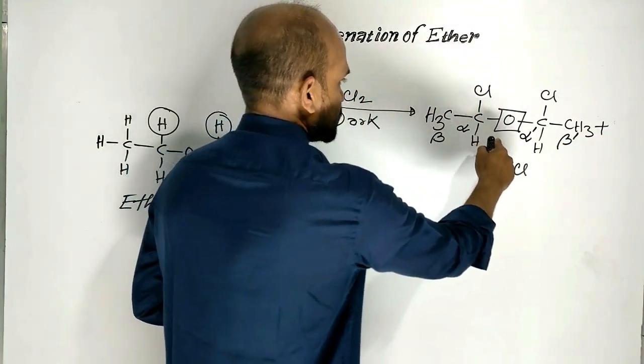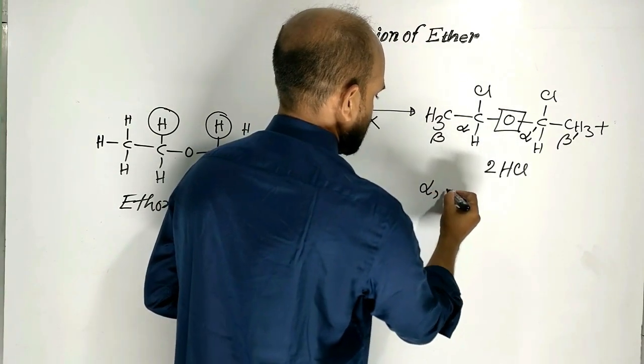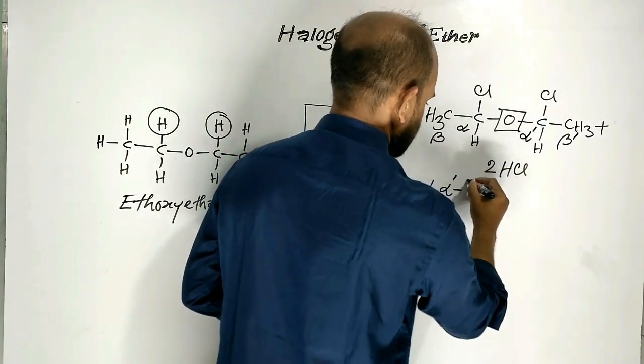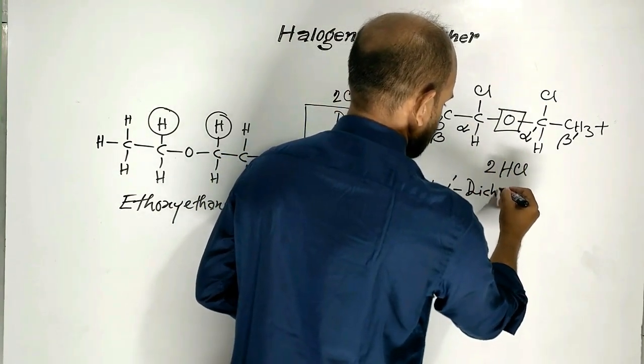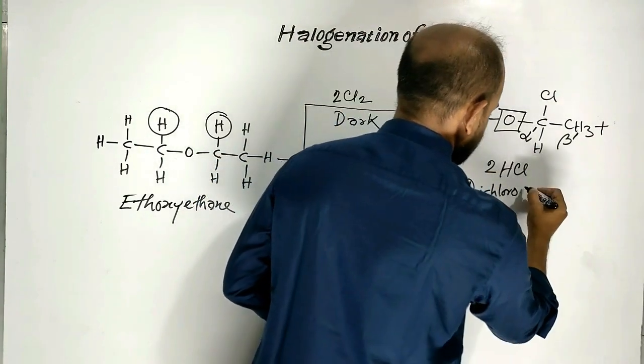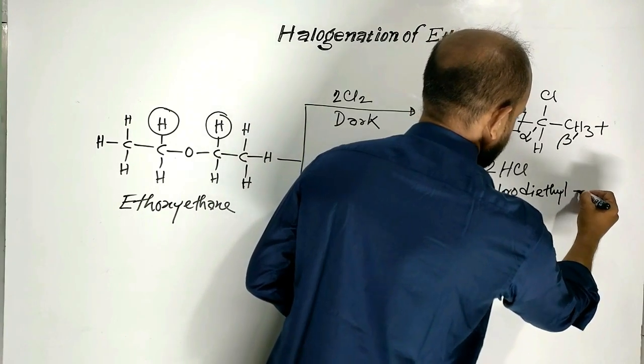Then, name of this compound will be alpha, alpha prime, dichloro, diethyl ether.